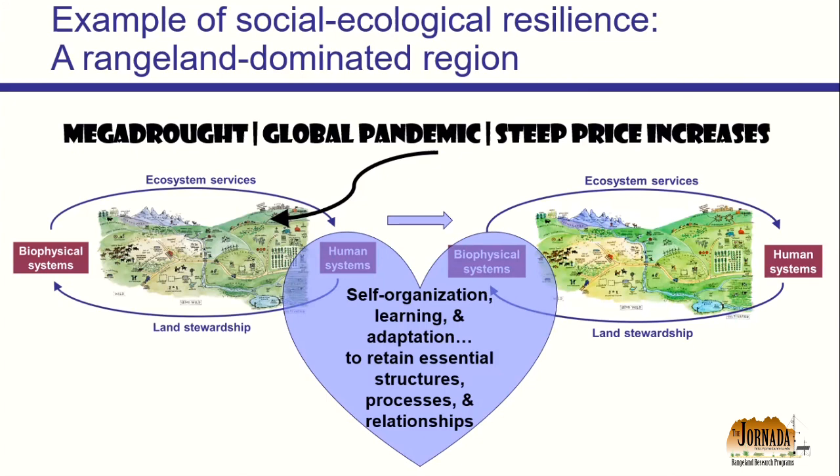What we come out with after this shock abates is a system with a lot of the same relationships, structures, and processes — it might look a little different, but there's still mostly rangeland, livestock on there, with the same relationships of ecosystem service provision and land stewardship. Although some enterprises will be different and some demographics will be different, it retains its basic structure. That, my friends, is resilience in a nutshell.